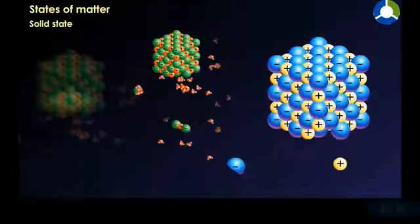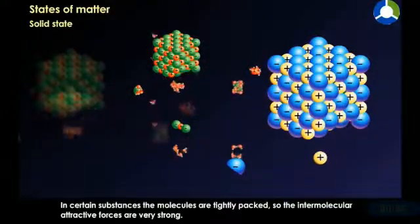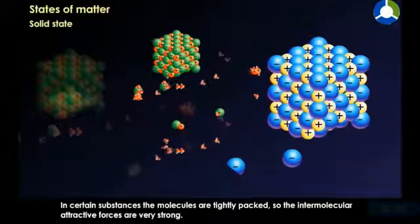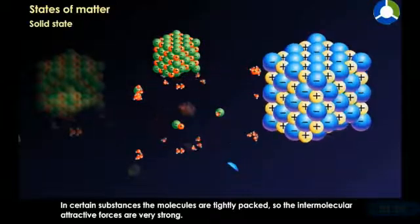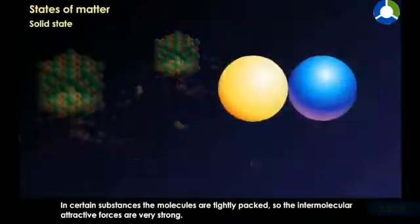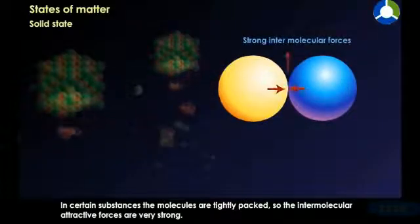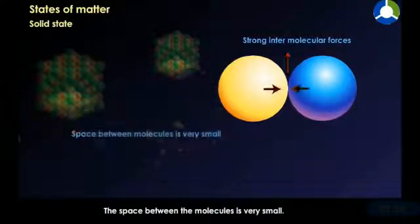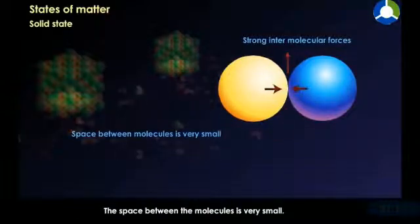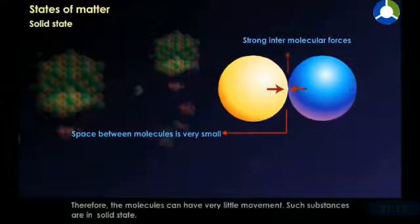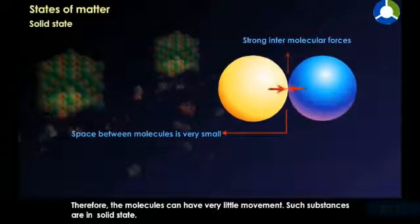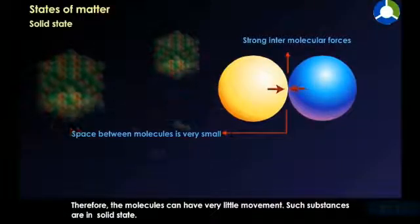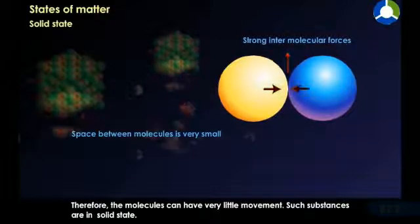It is the molecular arrangements in matter that decide whether a particular substance would exist in one state or other. Solid state: In certain substances, the molecules are tightly packed. So the intermolecular attractive forces are very strong. The space between the molecules is very small. Therefore, the molecules can have very little movement. Such substances are in solid state.